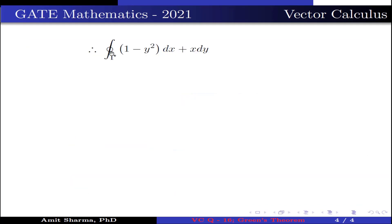Therefore, the closed integration over gamma (1-y²)dx + xdy can be written as double integration over R (1+2y)dxdy, which is further written as integration from 0 to 2, integration from 0 to 2, (1+2y)dxdy. The region R has x varying from 0 to 2 and y varying from 0 to 2.